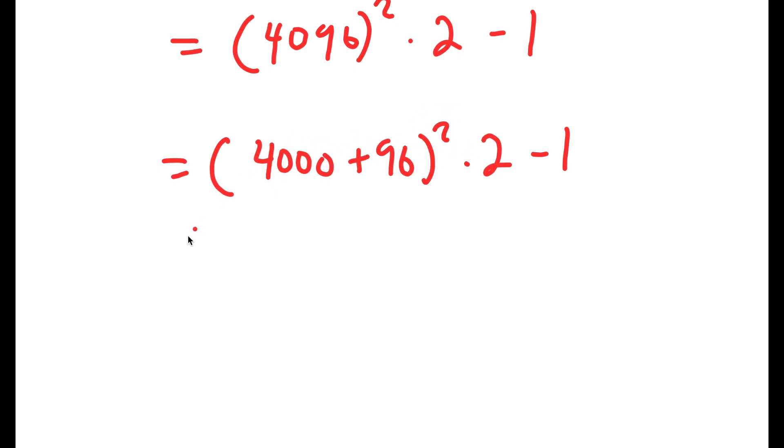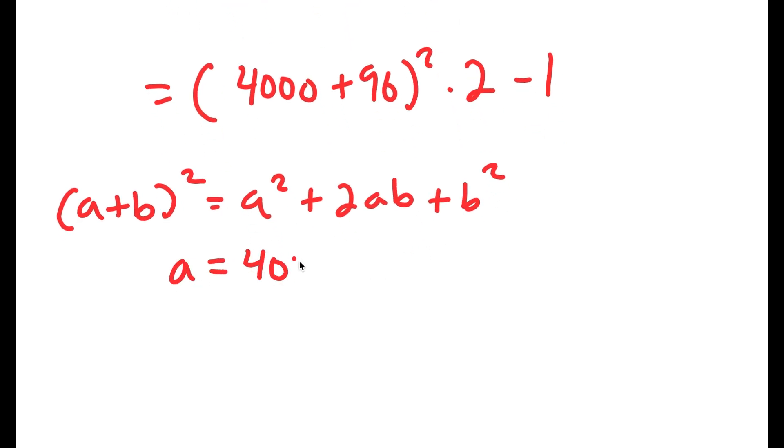If we change it to 4,000 plus 96 squared, I can use the property a plus b squared is equal to a squared plus 2ab plus b squared. So in this case a is 4,000 and b is 96.